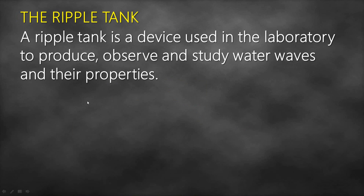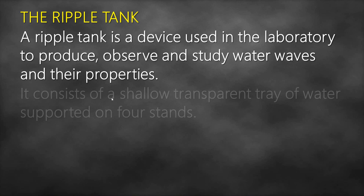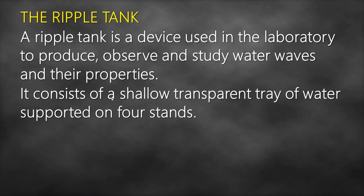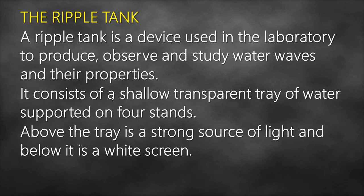A ripple tank is a device used in the laboratory to produce, observe, and study water waves and their properties. We can generalize the properties of water waves to even other waves. A ripple tank consists of a shallow, transparent tray of water supported on four stands. Above the tray is a strong source of light, and below it is a white screen.